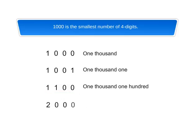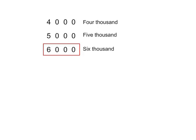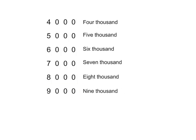2,0,0,0 stands for 2 thousands, 0 hundreds, 0 tens, and 0 ones. It is read as 2,000. Similarly, 4,0,0,0 is read as 4,000. 5,0,0,0 is read as 5,000. 6,0,0,0 is read as 6,000. 7,0,0,0 is read as 7,000. 8,0,0,0 is read as 8,000. 9,0,0,0 is read as 9,000.